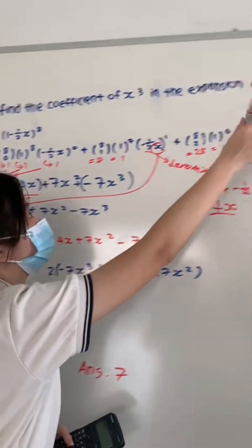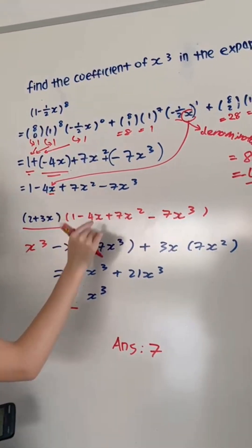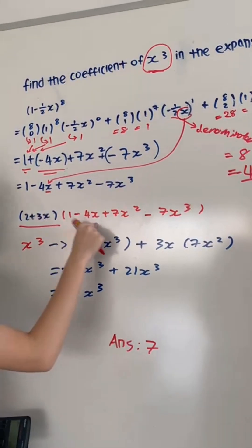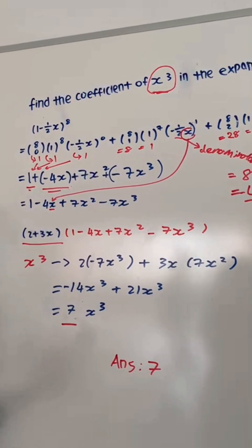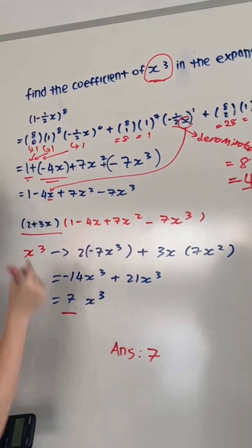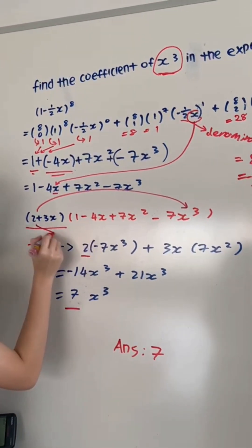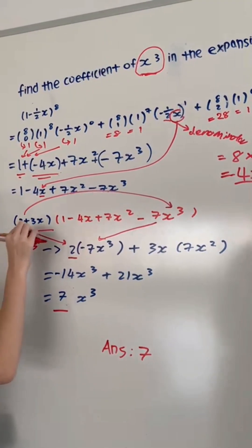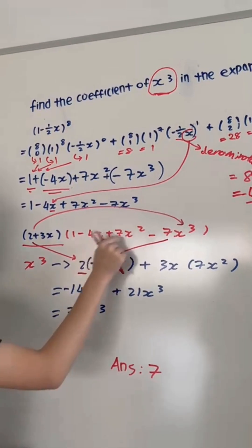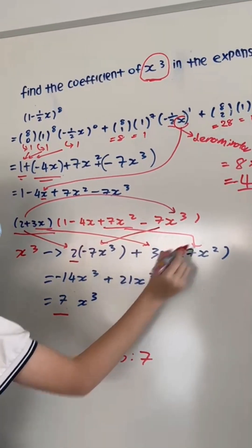Now we expand (2 + 3x) times (1 - 4x + 7x² - 7x³) to find the coefficient of x³. We identify which products give x³: 2 times (-7x³) gives -14x³, and 3x times 7x² gives 21x³. We write these down and solve.